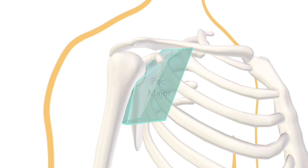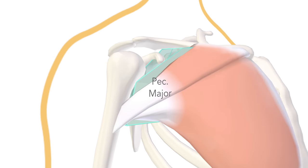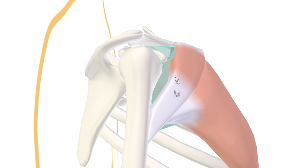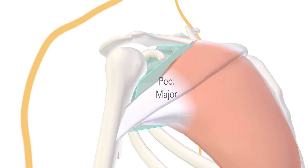Anteriorly that is pectoralis major, inserting on the lateral lip of the intertubercular sulcus and providing the axilla's anterior surface.